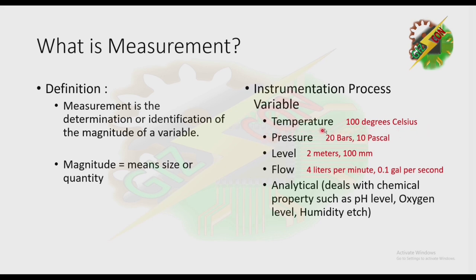For pressure, we also have 10 Pascal — 10 is the magnitude and Pascal is the unit. For level, we have 2 meters — 2 is the magnitude and meters is the unit. We also have 100 mm. For flow, we have 4 liters per minute — 4 is the magnitude and liters per minute is the unit. For analytical, it deals with chemical properties such as pH or acidity, oxygen level, humidity, and so on.